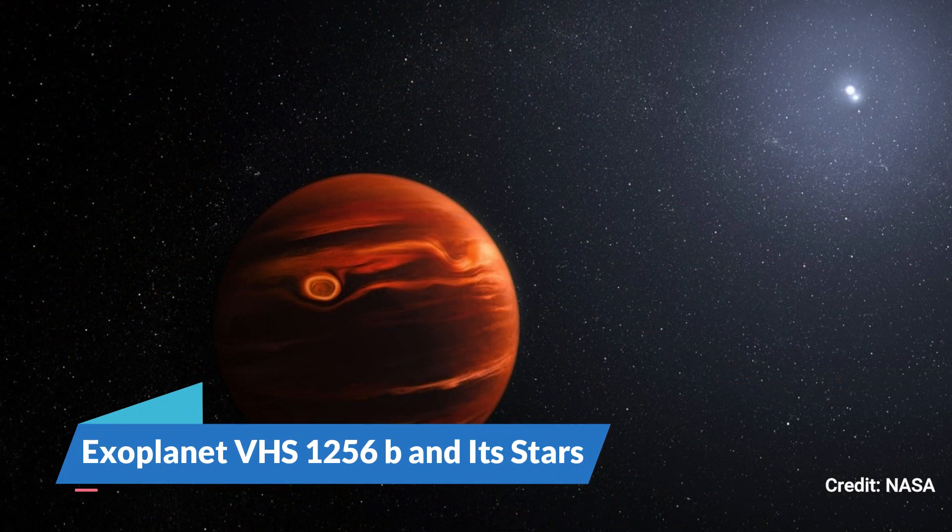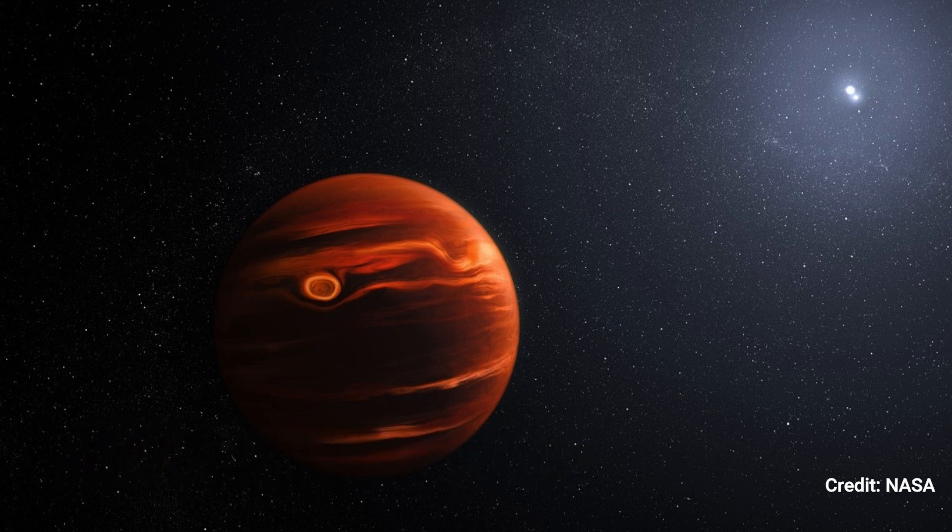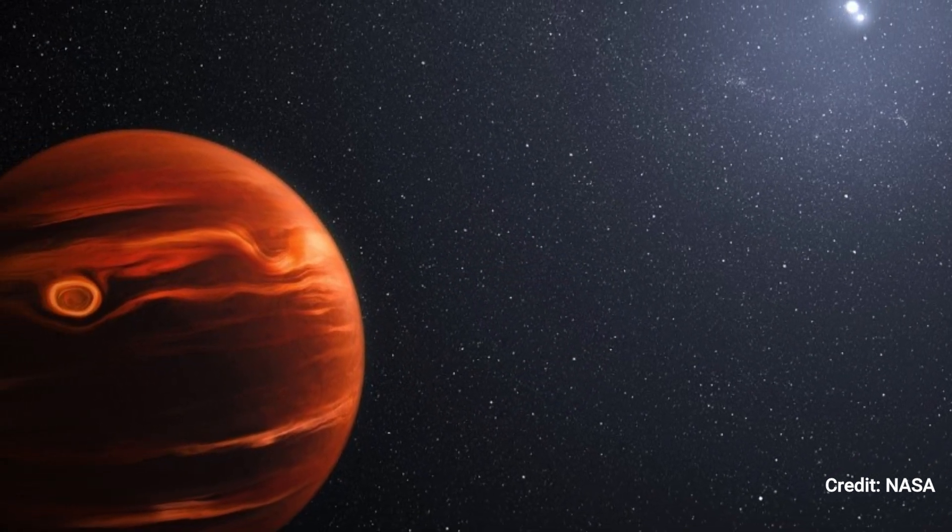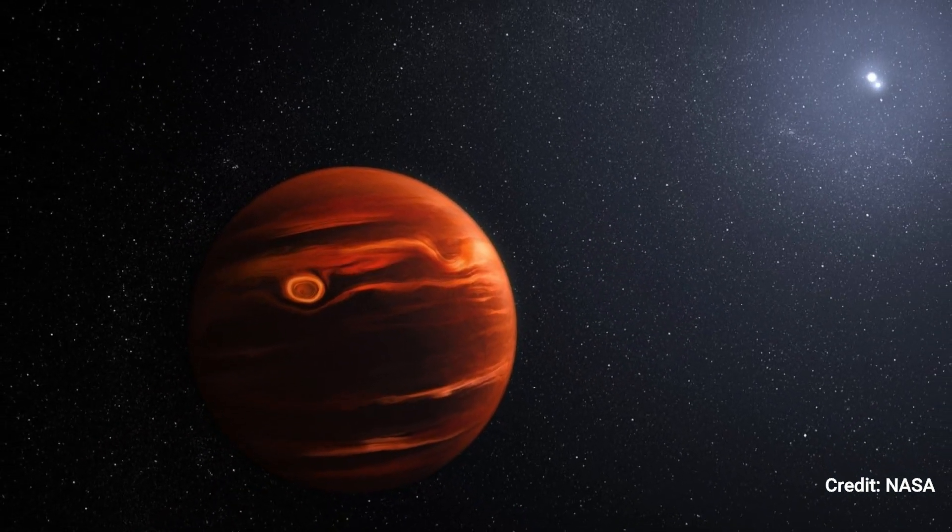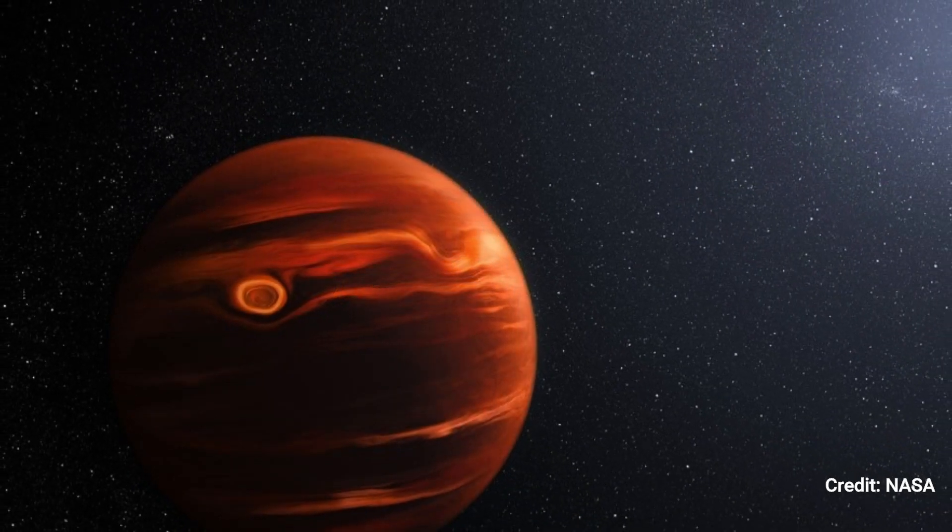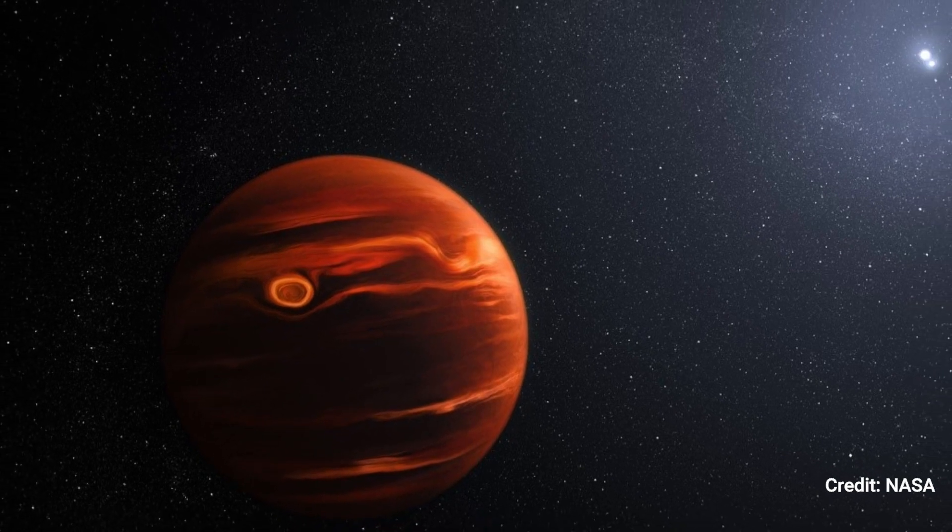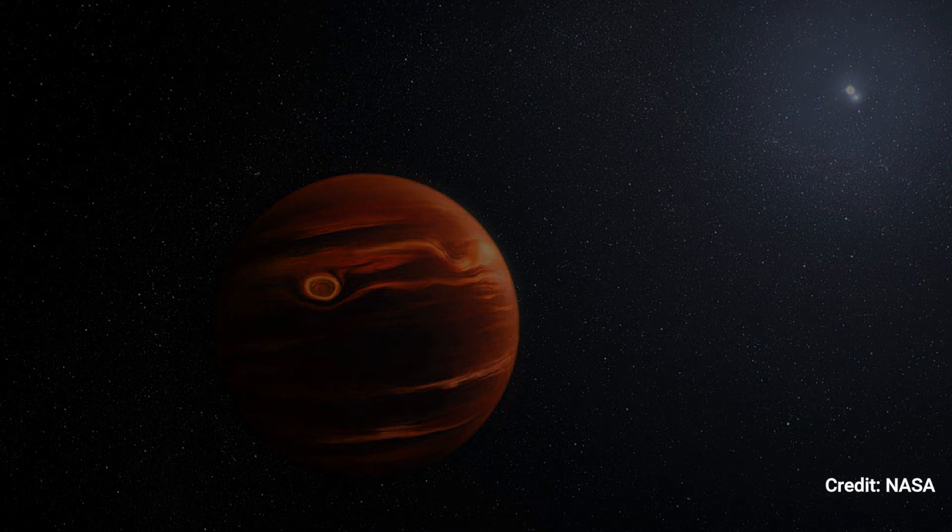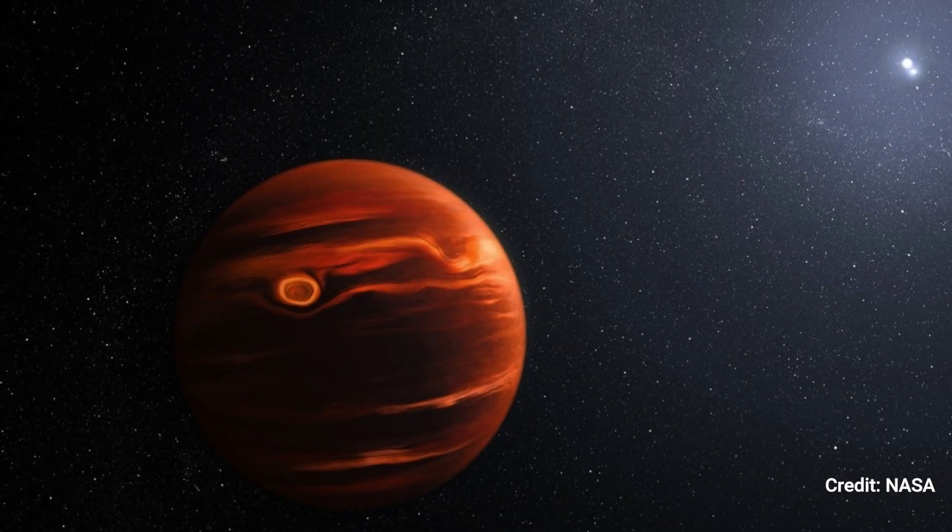Exoplanet VHS 1256 b and its stars. The swirling clouds detected by the James Webb Space Telescope in the atmosphere of Exoplanet VHS 1256 b are seen in this picture. The planet is around 40 light-years distant and orbits two stars that are locked in a tight spin of their own. During its 22-hour day, its clouds are continually rising, mixing, and moving.